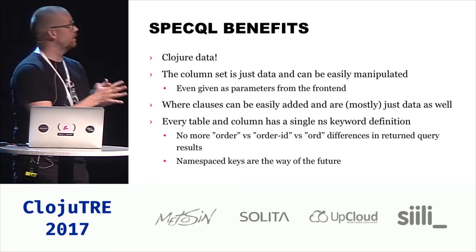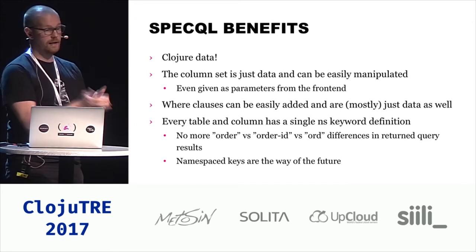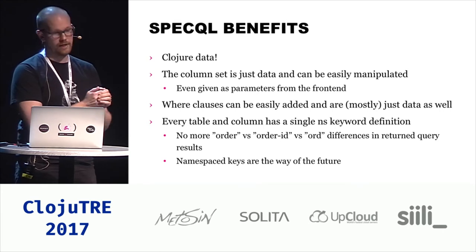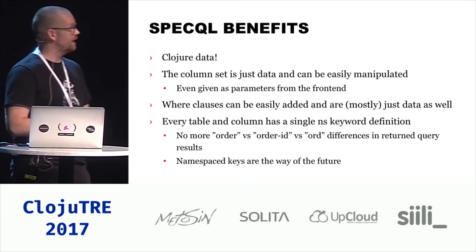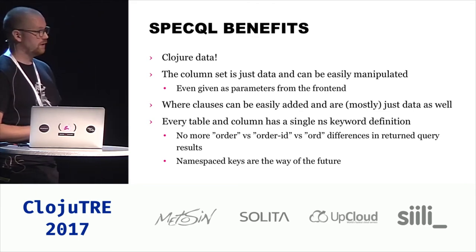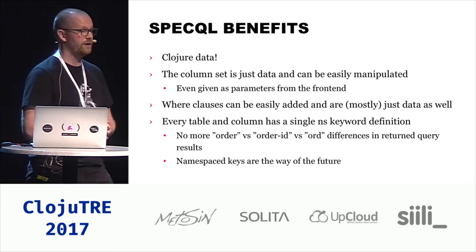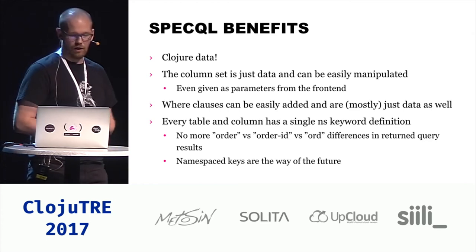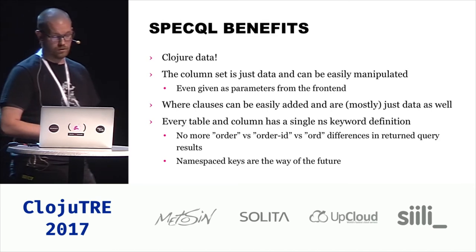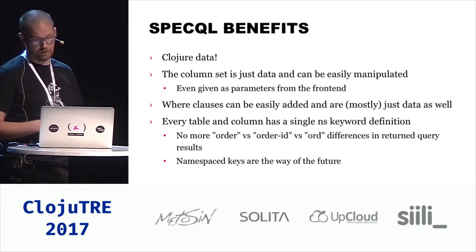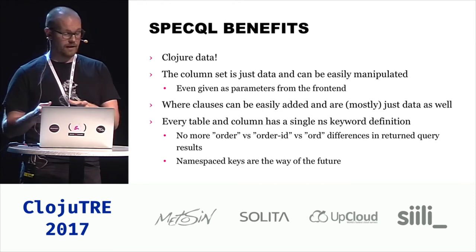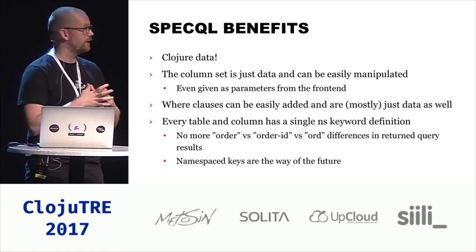What are the benefits of using SpecQL? Well, Clojure data — no more mucking about with concatenating strings with libraries. A column set is just data and can be easily manipulated, even given as parameters from the front end. So you don't need any fancy GraphQL stuff — you can just use Clojure data. The where clauses are mostly data as well; they're just records that have a protocol implementation. And the key benefit, I think, is that every table and column has a single namespace keyword definition.